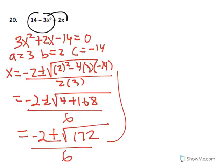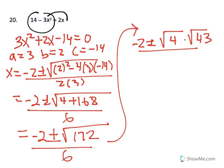But 172 can be factored. So negative 2 plus or minus square root of 4 times square root of 43 all over 6. So this gives us negative 2 plus or minus 2 square root of 43 all over 6.